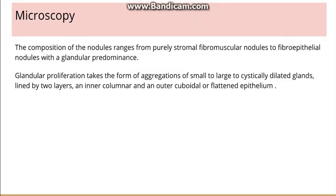Going to the microscopic features. The composition of the nodules can range from purely stromal to epithelial with glandular predominance. If there is glandular predominance, we will see glands ranging from small to large, and some that are cystically dilated. These glands are again lined by two layers of epithelium — inner columnar and outer flattened epithelium. This is very important because the inner layer is lost in carcinomas but is present in BPH.